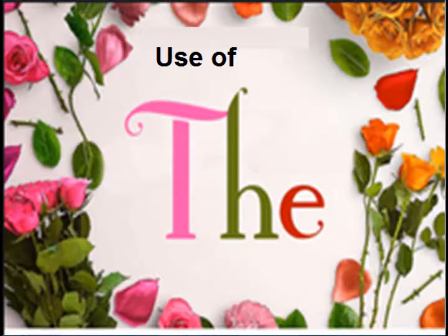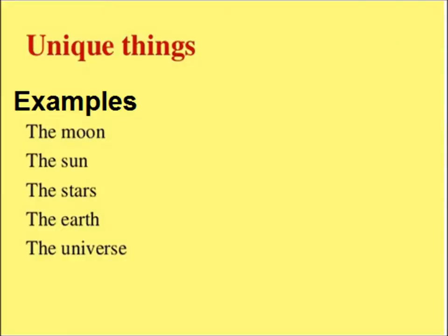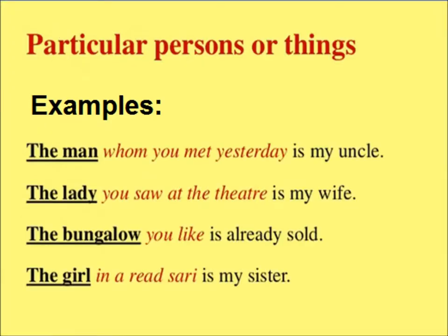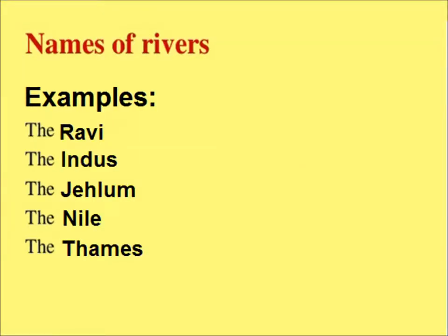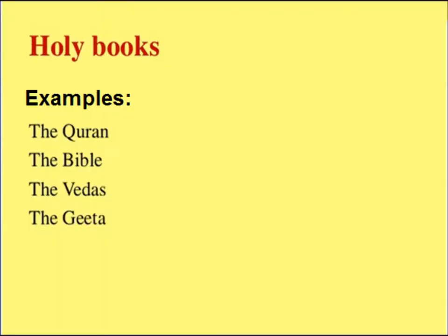अब हम देखते हैं कि 'the' article कौन सी situations में use कर सकते हैं। Unique things जैसे moon, sun, the stars, the earth — जिनका कोई उन जैसा नहीं है। Particular persons or things — the man whom you met yesterday is my uncle। Rivers के नाम से पहले 'the' — the Ravi, the Indus, the Jhelam, the Nile। Holy books से पहले 'the' — the Quran, the Bible।